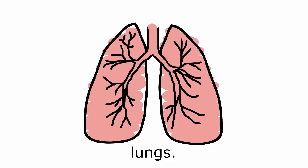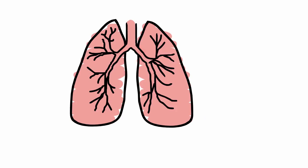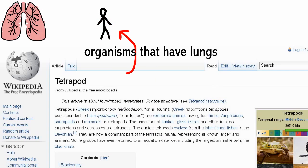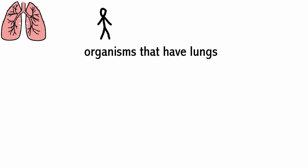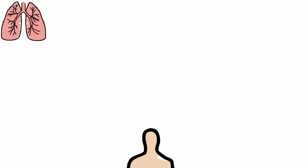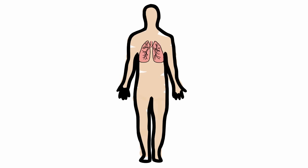So these are the lungs. They are vital organs in tetrapods, which is anything with four limbs and a spine, as well as some fish and some snails. In humans, they go about here, and they allow the body to take in oxygen and get rid of carbon dioxide, which is what we call respiration.